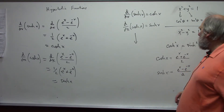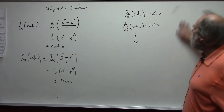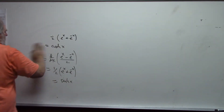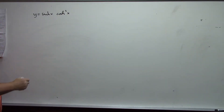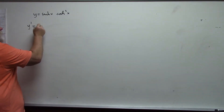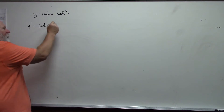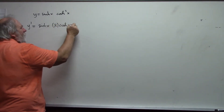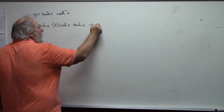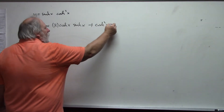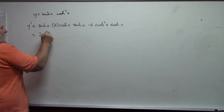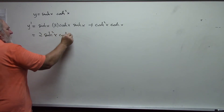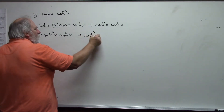Now let's do a couple of examples. Suppose I have y equals sinh of x times cosh squared of x. To find the derivative I use the product rule: first times the derivative of the second, which is 2 cosh of x times sinh of x, plus the second, cosh squared of x, times the derivative of the first, which is cosh of x. Combining gives 2 sinh squared of x times cosh of x plus cosh cubed of x.